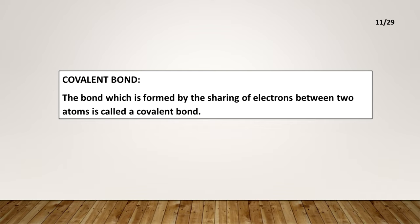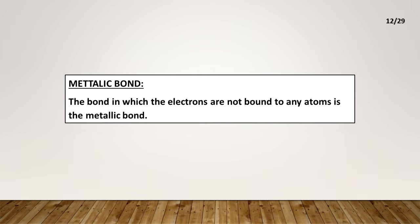Covalent bond: The bond which is formed by the sharing of electrons between two atoms is called a covalent bond. Metallic bond: The bond in which the electrons are not bound to any atoms is the metallic bond.